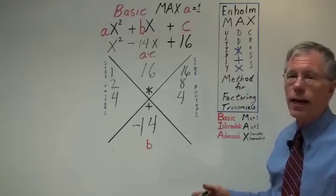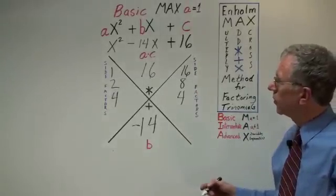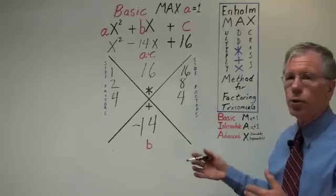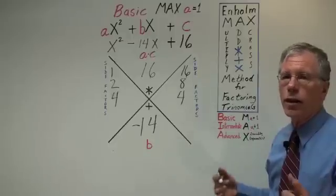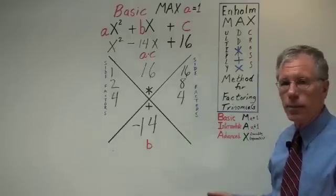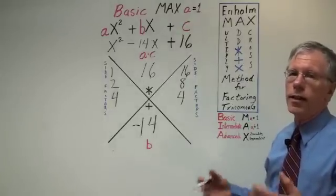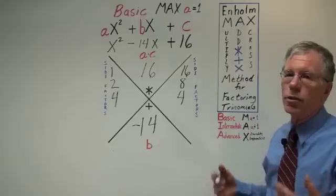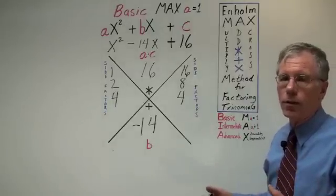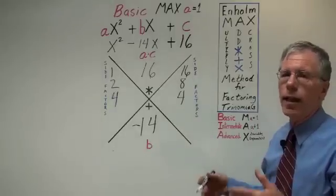Well, max can factor all trinomials, which can be factored. It's very important to realize that not all trinomials can be factored. And here's where max is really strong. In this situation, we can use the max framework to prove that this polynomial is not factorable or a prime polynomial. A prime polynomial is like a prime number. A prime number, like 7, can only be divided by 1 and itself, 7. That's true of a prime polynomial also.